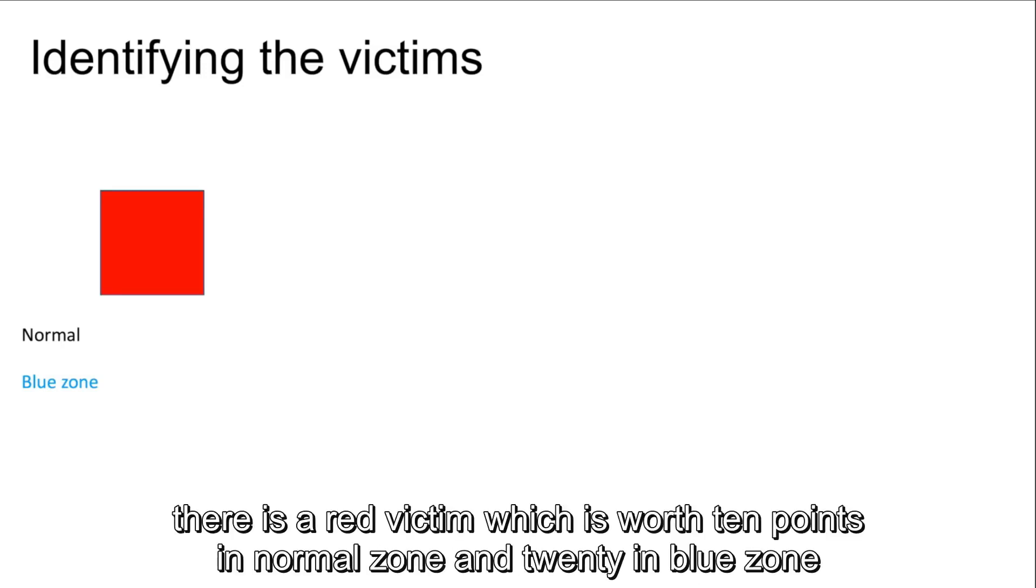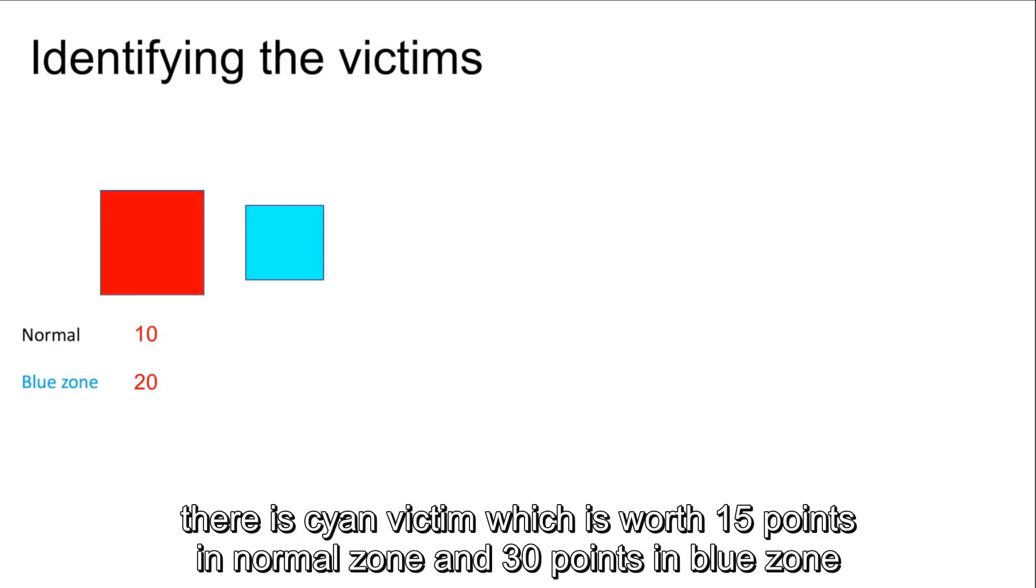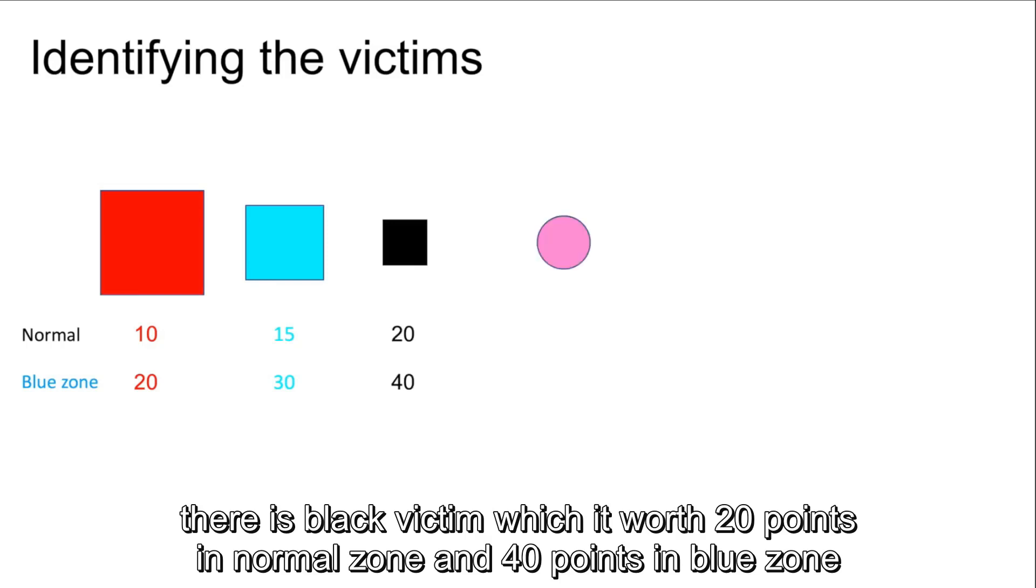Let's start with the victim types. There's a red victim which is worth 10 points in normal zone and 20 in the blue zone. There's a cyan victim which is worth 15 points in normal zone and 30 points in the blue zone. There's a black victim which is worth 20 points in normal zone and 40 points in the blue zone.